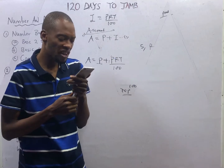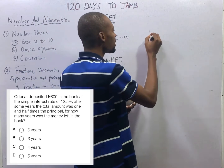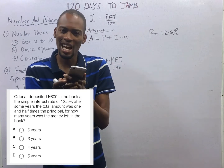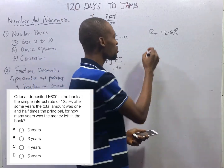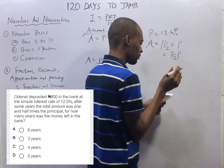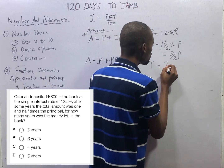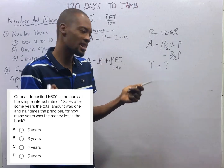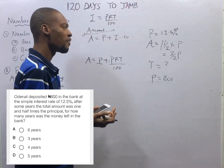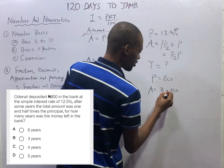Amazing right? Odenert deposited N800 in the bank at a simple interest rate of 12.5%. After some years, the total amount was 1 and a half times the principal — so amount equals (3/2) × principal, which is (3/2)P. For how many years was the money left in the bank? Principal is N800, so amount equals (3/2) × 800 = N1,200.